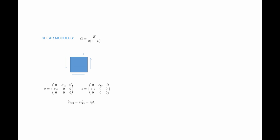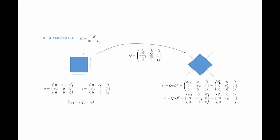If I have a cube of material under shear stress sigma_12, the shear strain is epsilon_12. The relationship between the shear stress and the engineering shear strain is: 2*epsilon_12 equals sigma_12 divided by G. I will now look at the same cube using a different coordinate system oriented 45 degrees from the original. In that new coordinate system, sigma prime equals Q*sigma*Q^T and epsilon prime equals Q*epsilon*Q^T.